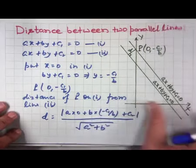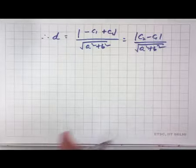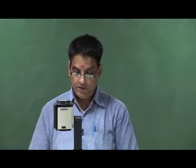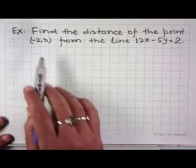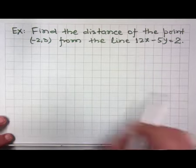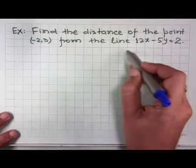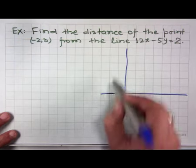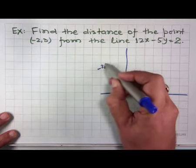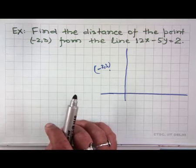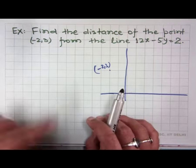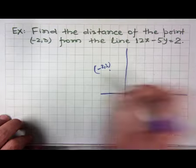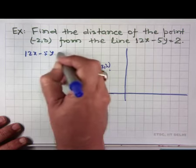We can find the distance between any two parallel lines using this formula. Now let us take some examples. Find the distance of the point (−2, 3) from the line 12x − 5y = 2.